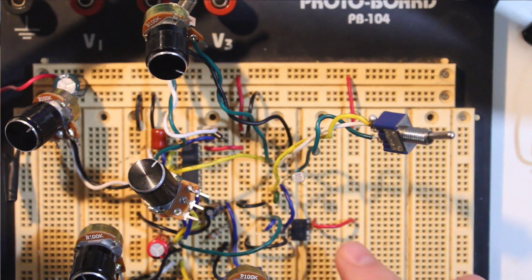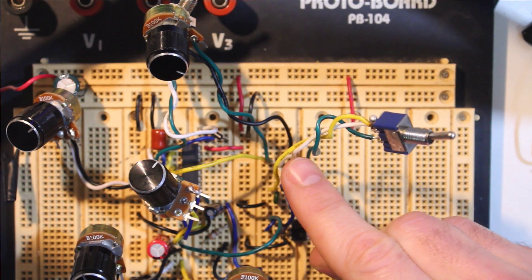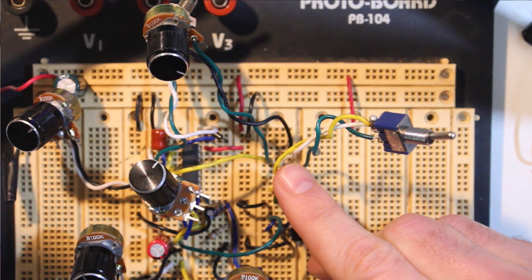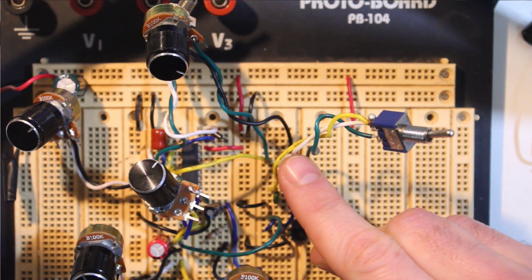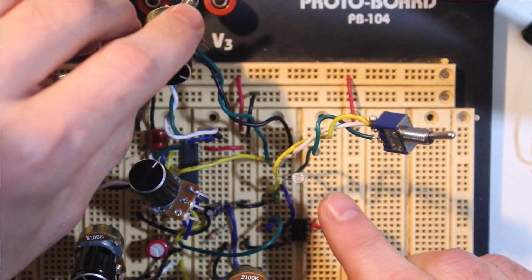If we throw the switch, we can see how the LDR reacts when we put our finger over it. You can still use the cutoff knob to alter the sound.